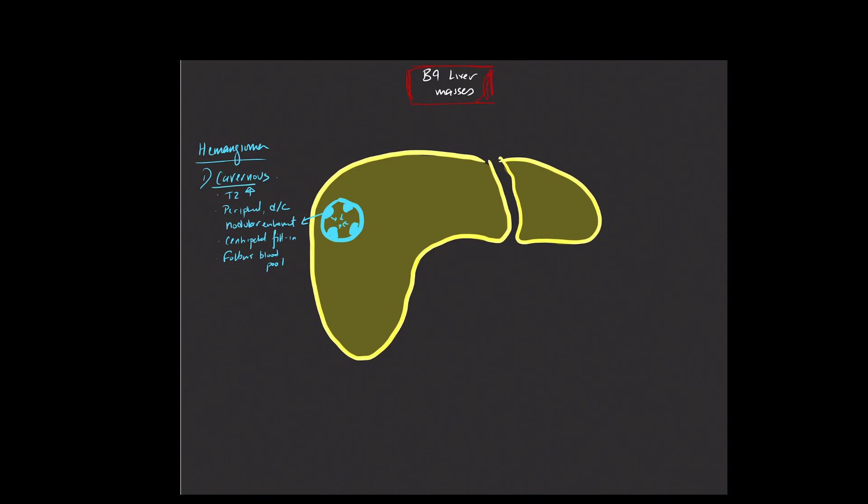Next up, we have what we call flash-filling hemangiomas. Sometimes these are also referred to as capillary hemangiomas. Like cavernous hemangiomas, these will also be T2 hyperintense. When you give contrast, they'll enhance on the arterial phase imaging.